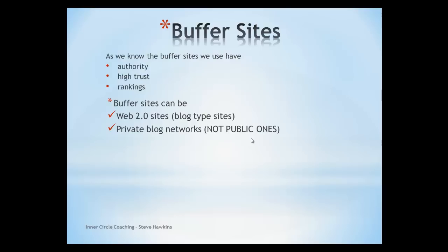The buffer sites we create that will use this rank, trust, and authority are either Web 2.0 sites — these are blog-type sites which we can post articles to, add links back to our own money site and gain the benefit — or we can create private blog networks. This isn't the same as public blog networks that were hit with Penguin; these are networks that we create ourselves, but we need to create these in a specific way. With both the Web 2.0 sites and the blog network sites, we must have all of these on separate IP addresses.